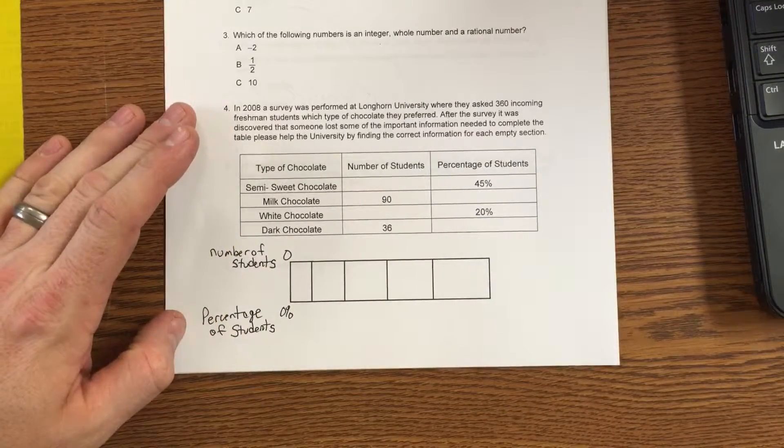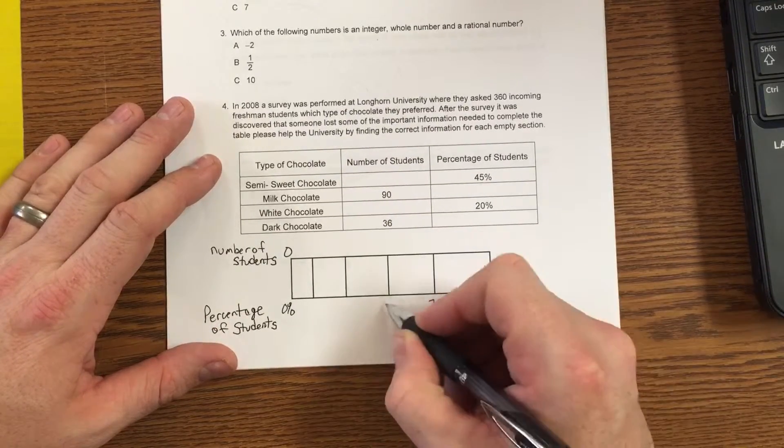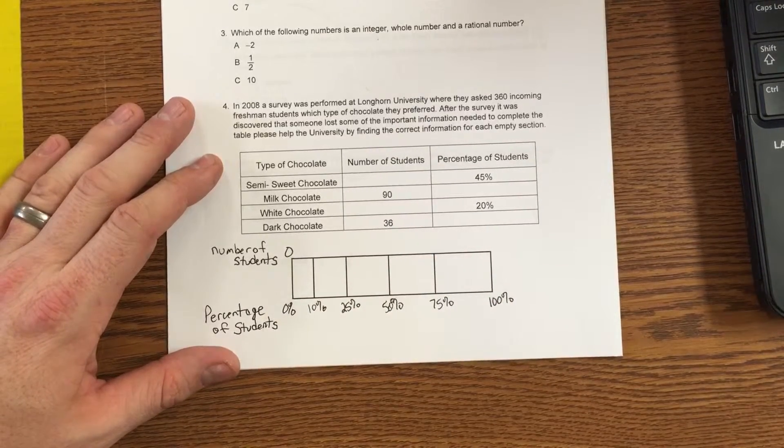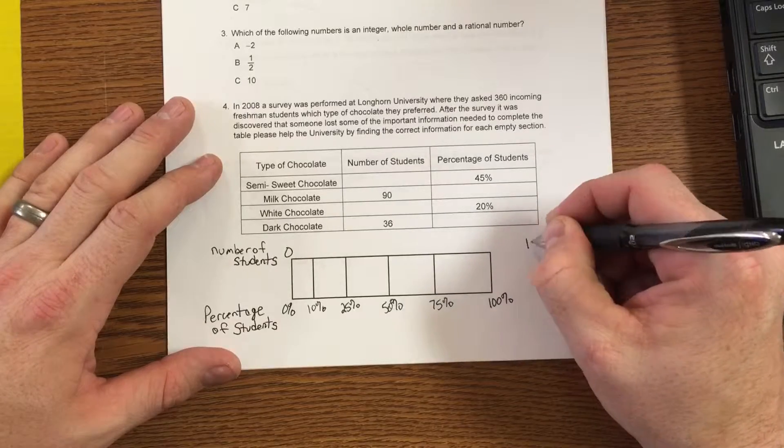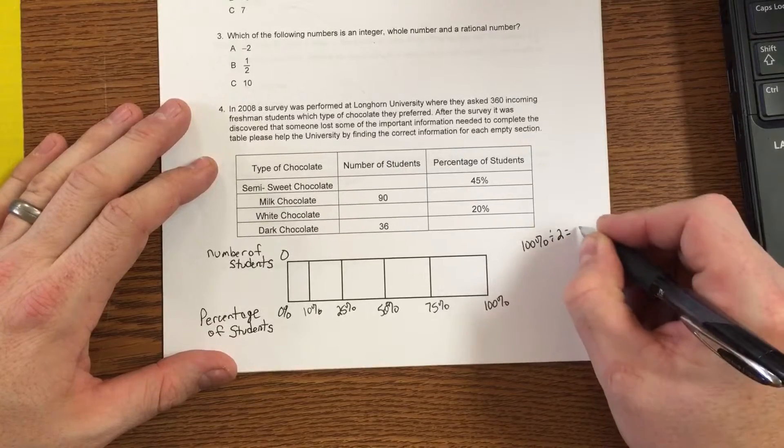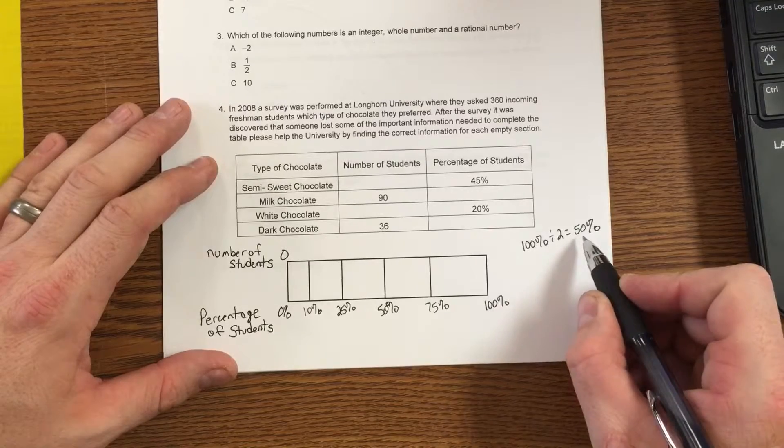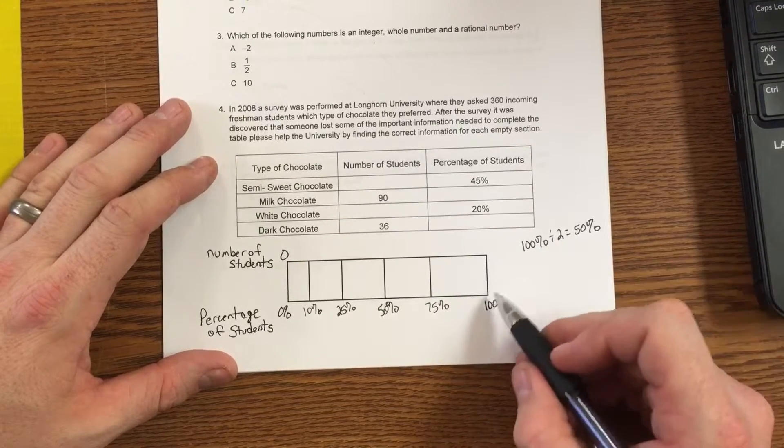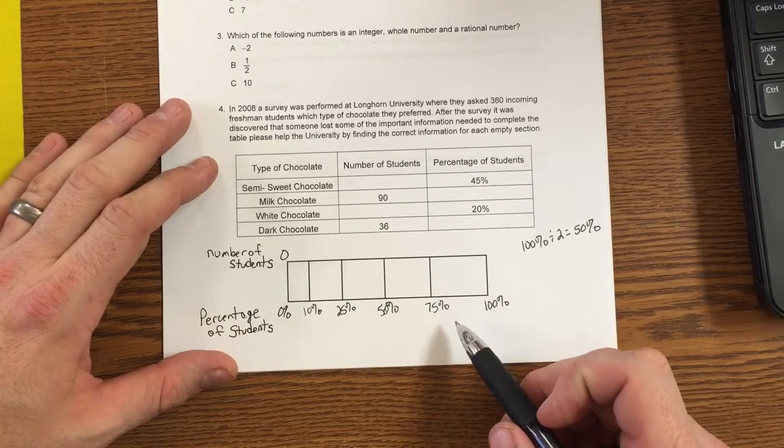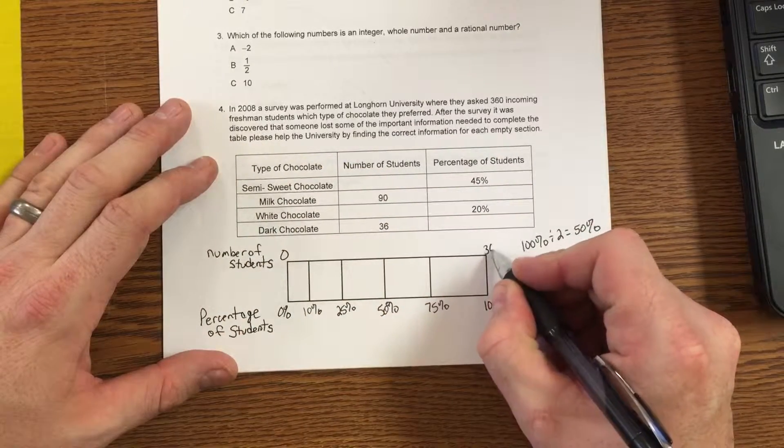Well, there are five benchmark percents, especially in Math B class. These five benchmark percents are 100%, 75%, 50%, 25%, and 10%. One of the things that I like to do right off the bat is find out what 50% is, and I do that right off the bat because of how easy it is to turn 100% into 50%. Well, how do I know what 100% is worth? What's the number of students? What's 100% of the students? 360 incoming freshmen, that's all the students.